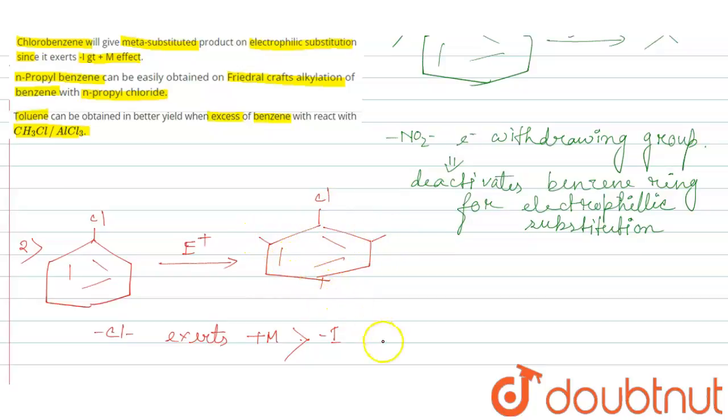So these positions will be occupied. You can say chlorine is ortho-para director. That is why statement one and statement two are incorrect. Now if we come to statement three.